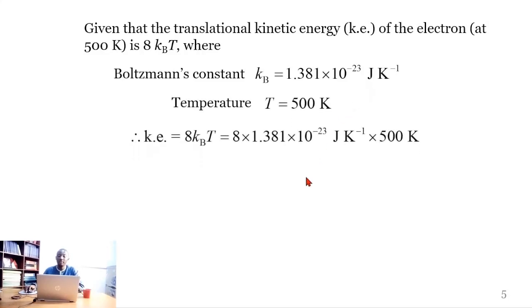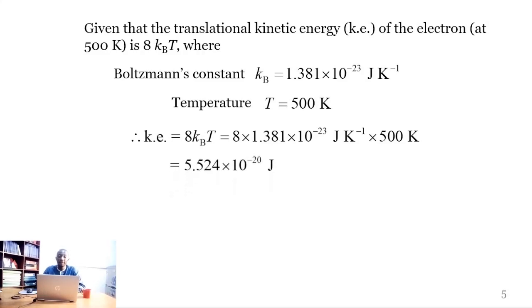If we multiply 8 by the Boltzmann constant and the temperature, we obtain the energy in joules. That gives 5.524 × 10⁻²² joules.